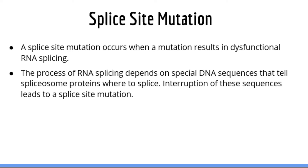Next we will talk about splice site mutations. A splice site mutation is any mutation that results in dysregulation of RNA splicing, which is the process of removing the non-coding parts of RNA, or introns. The process of RNA splicing depends on special DNA sequences that tell the spliceosome proteins where to splice. Interruption of these sequences can lead to dysfunctional splicing. Typically these mutations will result in a protein that either lacks an exon, the coding part of RNA, or contains an extra intron, the non-coding part of RNA. The physical properties of these proteins are usually drastically different from those of the original, so these proteins are usually non-functional.